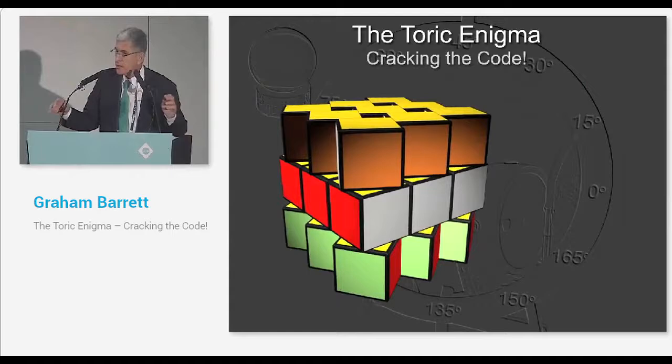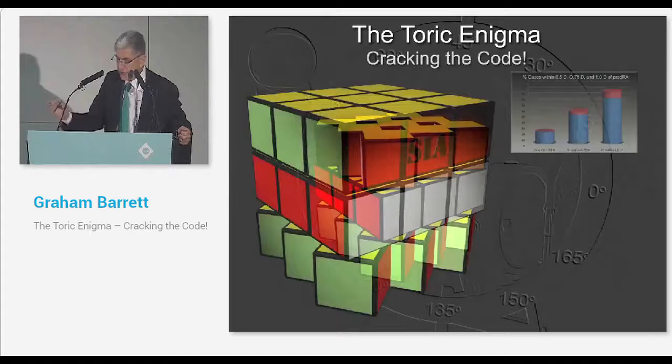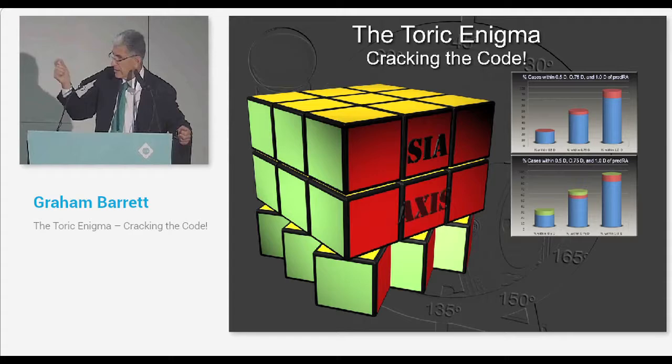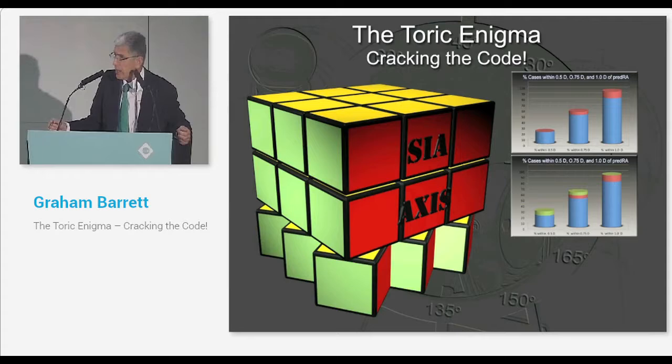Going back to our puzzle and trying to crack the code, the first thing is you will get an improvement by being more accurate with your SIA. There's a further improvement by being on axis of your toric lens, but as I said, it's quite modest. And the greatest factor of all that you can do today is to use an improved calculator in reducing unexpected toric outcomes.